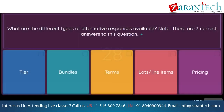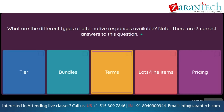Question: What are the different types of alternative responses available? Note, there are three correct answers to this question. Option 1: tier. Option 2: bundles. Option 3: terms. Option 4: lot/line items. Option 5: pricing.